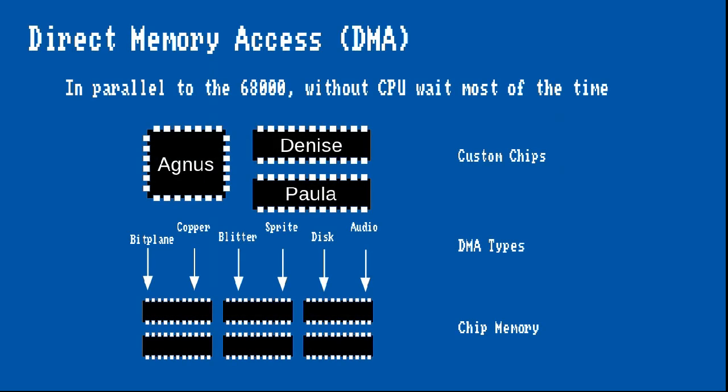This is a good time to introduce a central concept in the Amiga's hardware design: Direct Memory Access, or DMA. This technology allows the custom hardware to access chip memory and perform many operations in parallel to the CPU without affecting its performance most of the time. Certain configurations — particularly the blitter and copper — can cause your CPU to wait when it needs to access chip memory, so programmers need to take this into consideration.